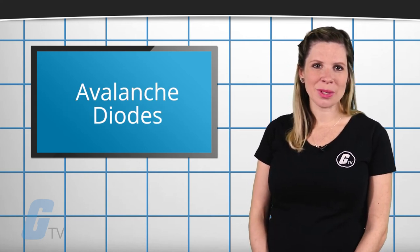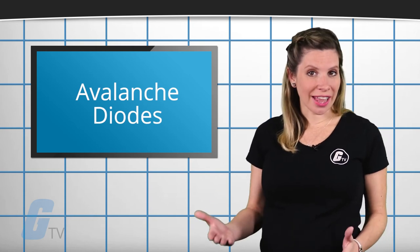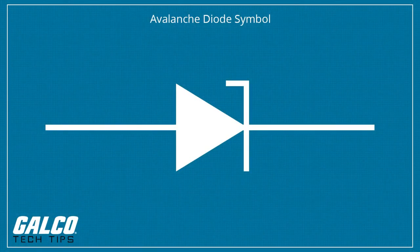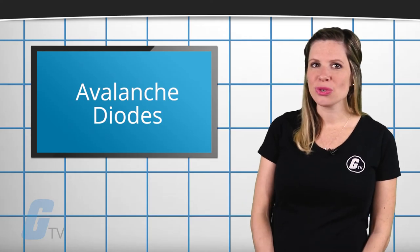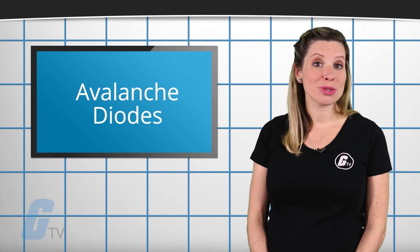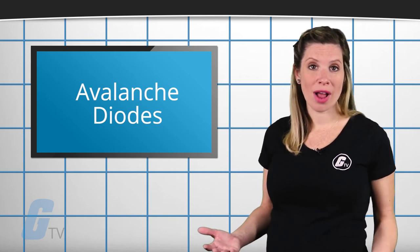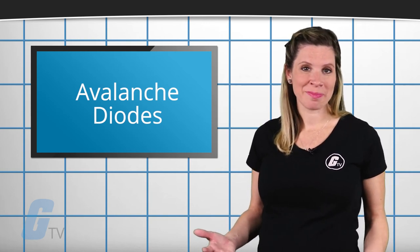Somewhat similar to Zener diodes are avalanche diodes. They are designed to go through avalanche breakdown at a specific reverse bias voltage and are optimized to do so due to their small but significant voltage drop under breakdown conditions.